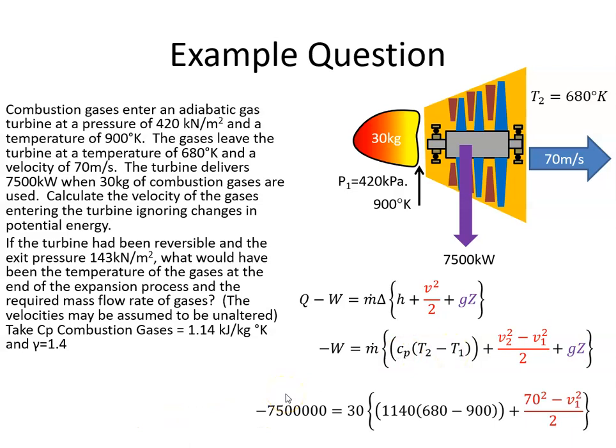If I plug in the values, the work done, this work value, was 7500 kilowatts, so that's 7,500,000 watts. The mass flow is 30 kilograms. Cp is 1140 joules, so I convert from kilojoules to joules.